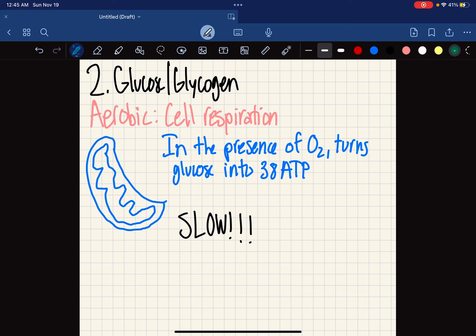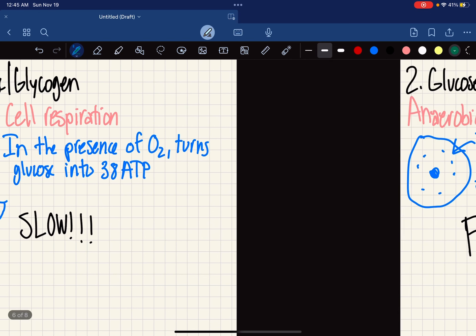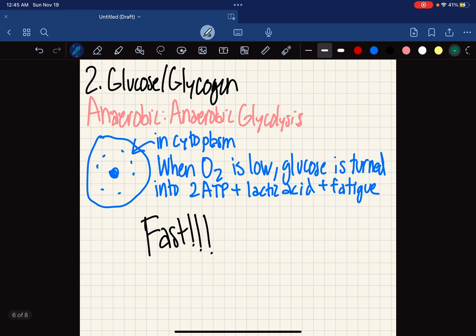The next one is anaerobic, so this is anaerobic glycolysis, and this occurs in the cytoplasm. Excuse my drawing, this is why we're in physiology class not art class.